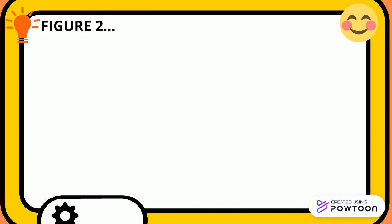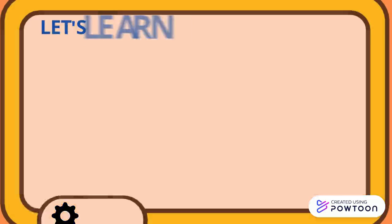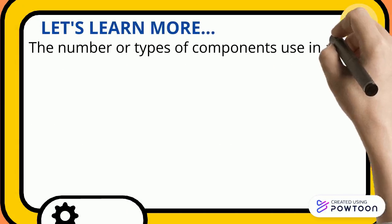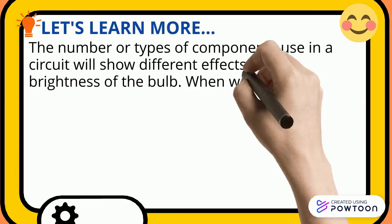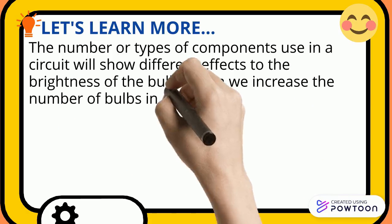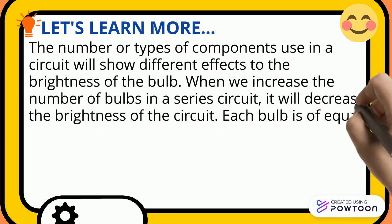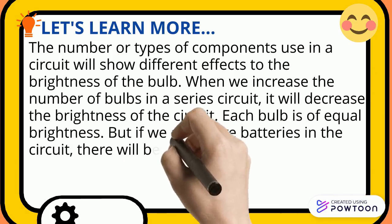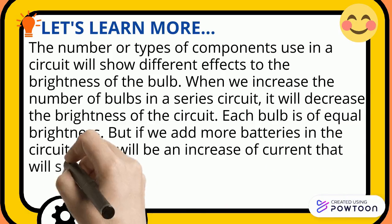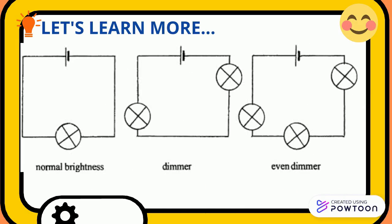As you can see, the wires are connected to each of the bulbs. The number or types of components used in a circuit will show different effects on the brightness of the bulb. When we increase the number of bulbs in a series circuit, it will decrease the brightness — each bulb is of equal brightness. But if we add more batteries in the circuit, there will be an increase of current that will show in the brightness of the bulbs.